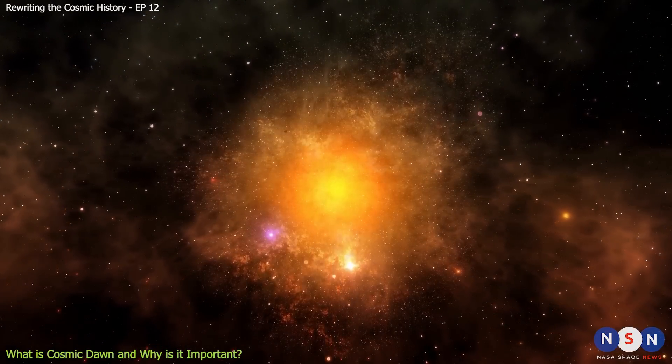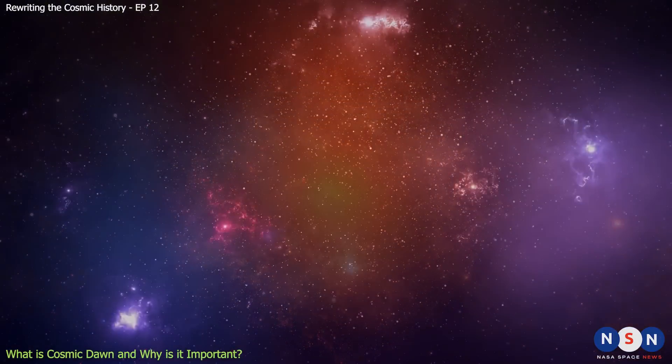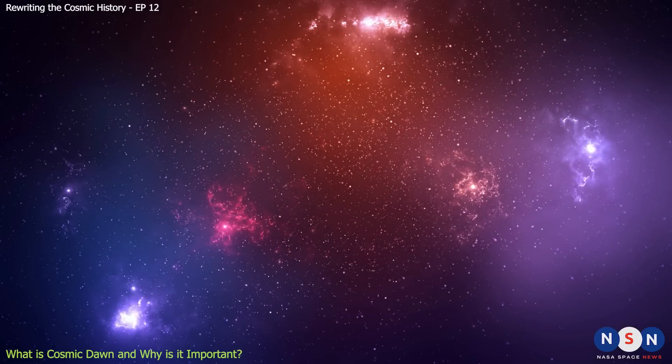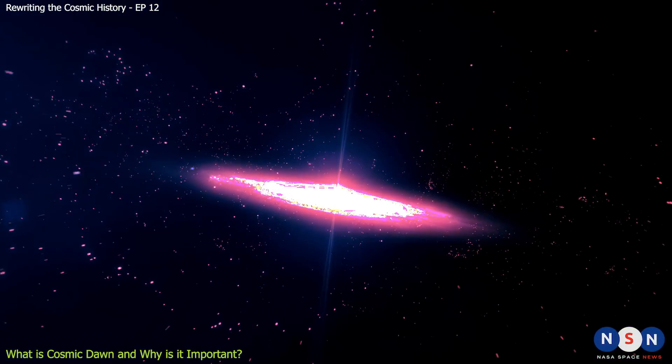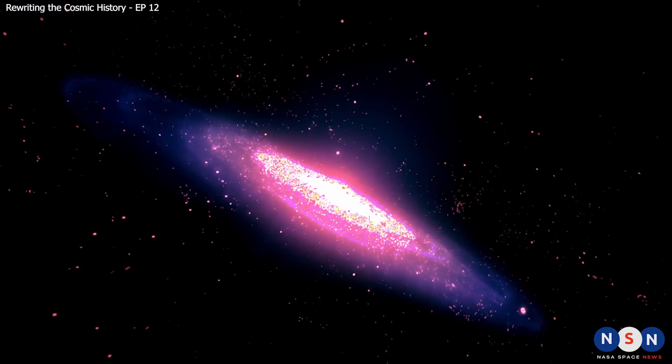However, seeing H-alpha emission in distant galaxies is very hard, because they are very far away and very faint. To do so, we need a powerful telescope that can see in infrared light and see through dust. And that's exactly what Webb can do.